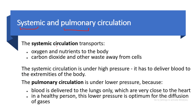Systemic circulation transports oxygen and nutrients to the body, and carries carbon dioxide and other waste products away from the cells.